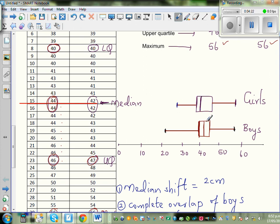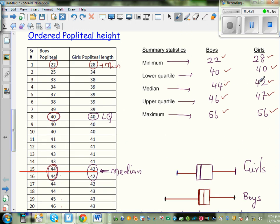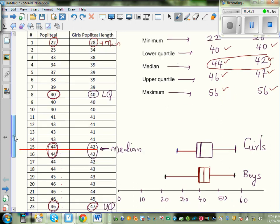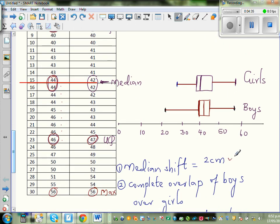upper quartile and maximum. So if you look at, let's talk about the median shift. The median shift is you're looking at the difference between the median. So the difference between the median is only 2 centimeters.